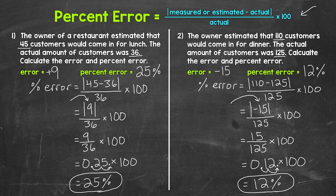Looking at numbers one and two — was the owner's estimate more accurate for lunch or for dinner? The error for number one was off by 9, above the actual value. For number two, the error was off by 15, under the actual value. The easy answer would be to say the lunch estimate was more accurate because the error was less — off by 9 compared to off by 15. But this is actually incorrect. The error doesn't give us enough information. The numbers we are working with and their size matter, and we have different numbers for lunch and dinner. We have to see how the errors compare to the actual values, and that gives us a much better idea of how accurate a measurement or estimate is.